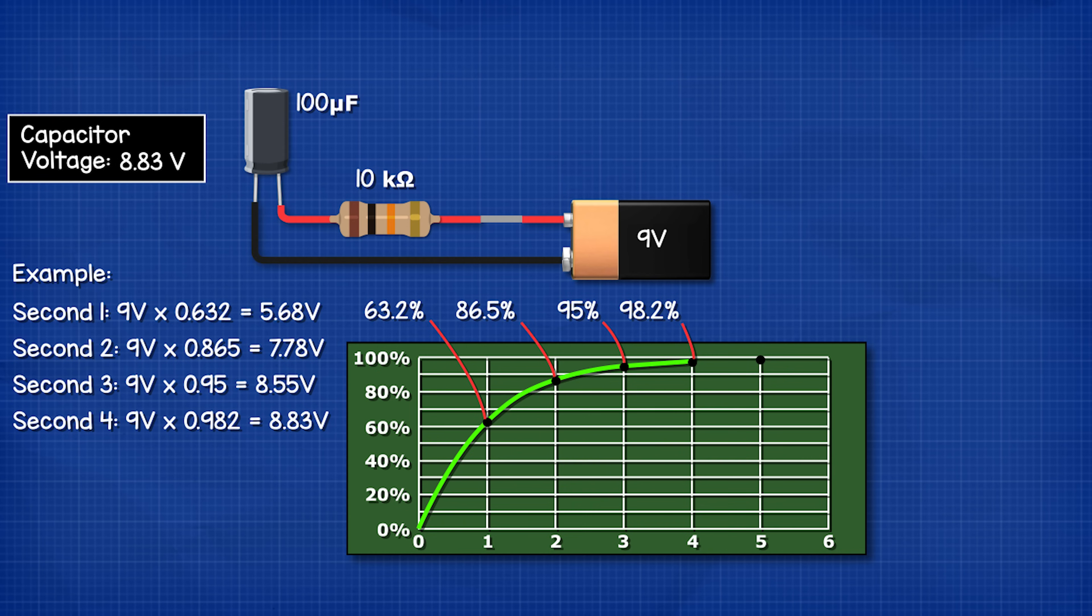Point four is 98.2 percent. And point five is 99.3 percent. So the voltage will never actually reach 100 percent. That's also why we stop at just five points.